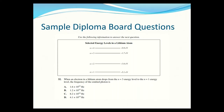We'll start off with some sample diploma board questions. When an electron in a lithium atom drops from n=3 down to n=1, we need to find the frequency of the photon emitted. We're dropping from n3 to n1, and we have to find the energy difference. Just get rid of the negatives — go 5.1 minus 1.7 — so the photon emitted would have an energy of 3.4 electron volts.